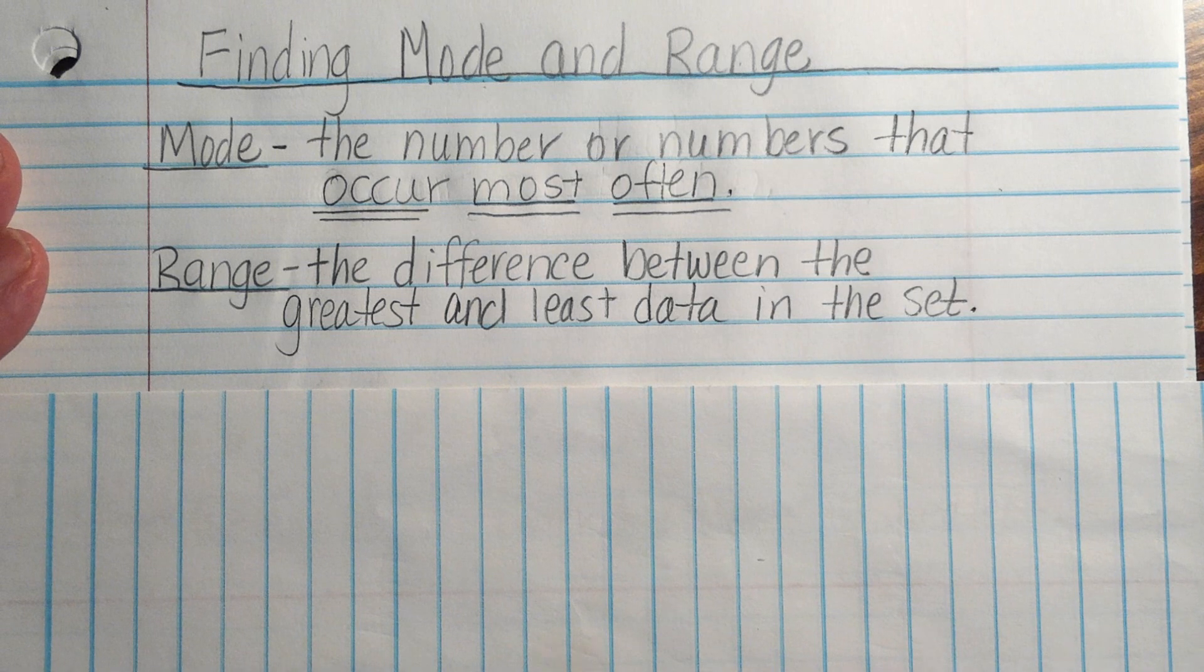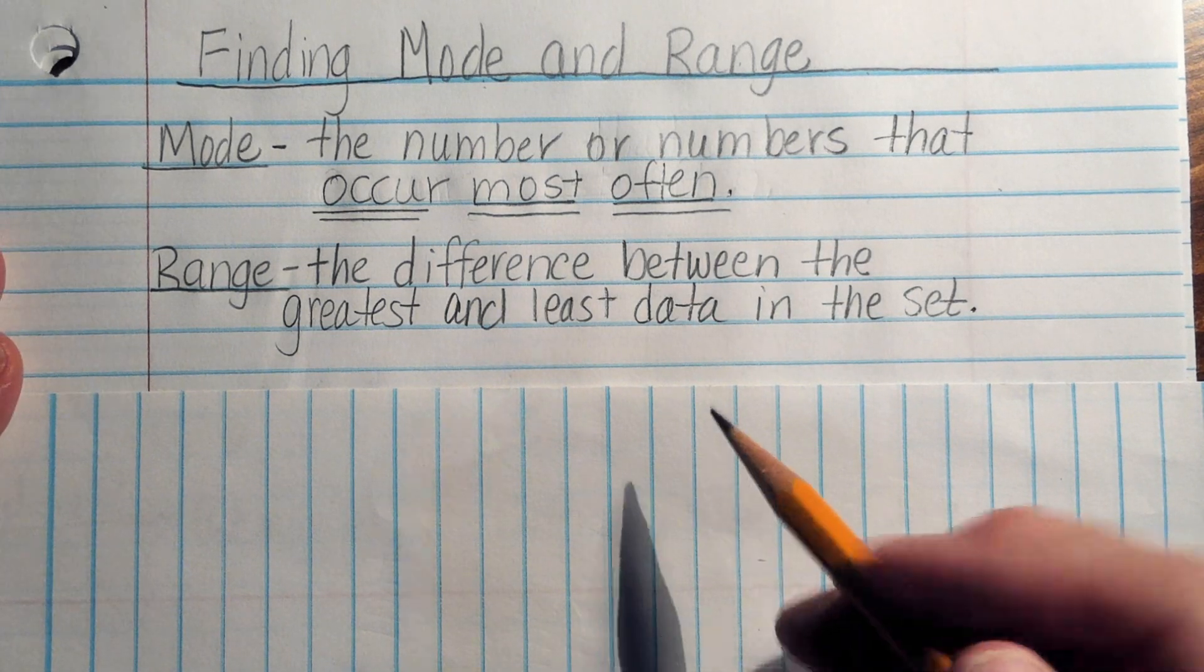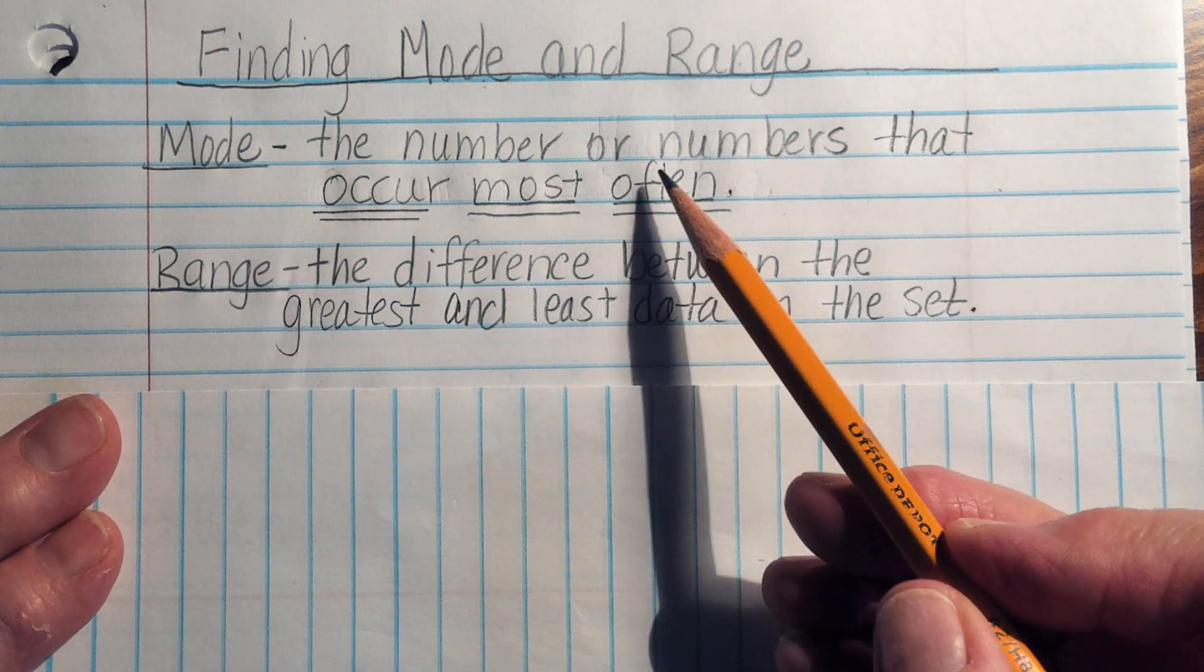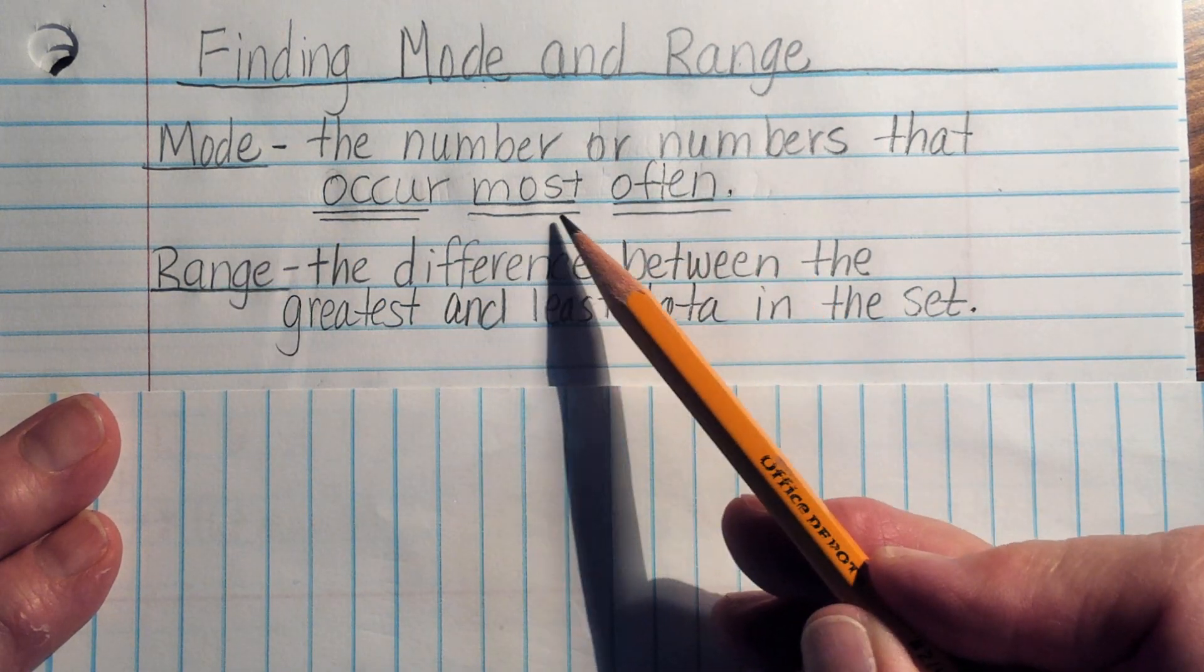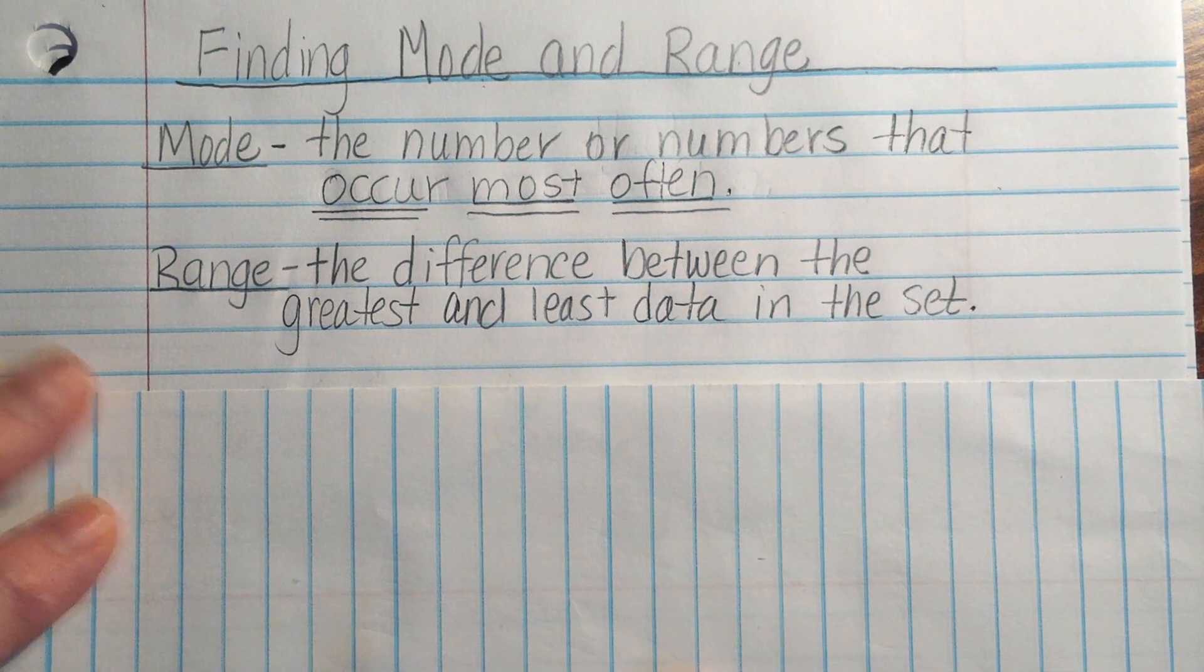In this lesson, we're going to look at how to find the mode and range in a set of data. Let's take a look at our vocabulary first. Mode is the number or numbers that occur most often, and range is the difference between the greatest and least data in the set.